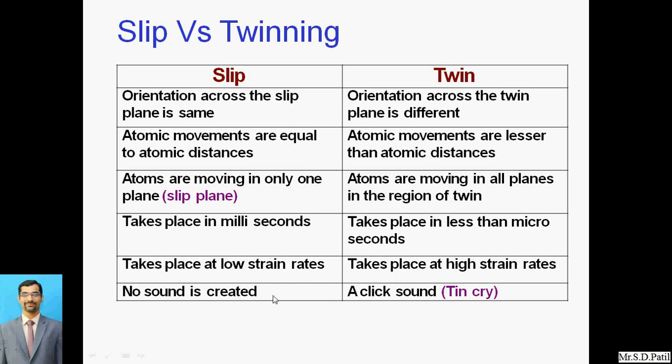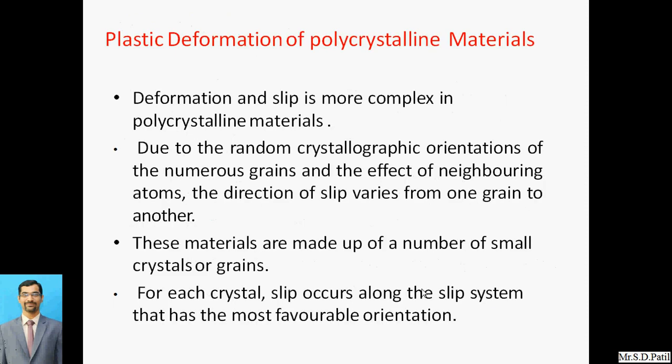For slip, no sound is created. For twinning, a click sound is created when the structure gets disturbed. This is all about slip and twinning and how the shear effect has been considered. Now the last part of this lecture is plastic deformation of polycrystalline material.